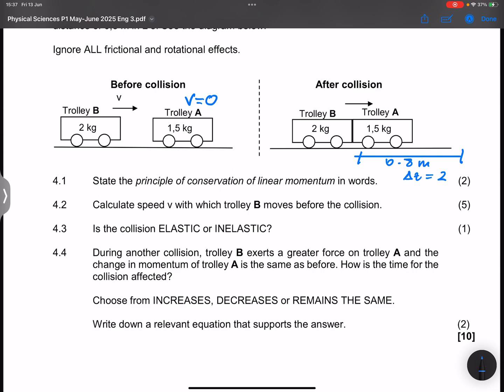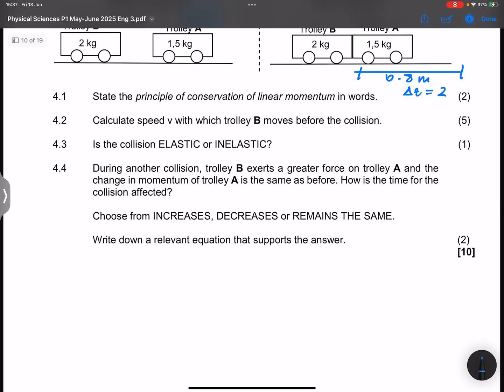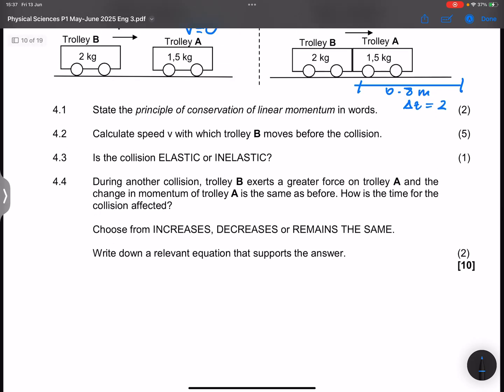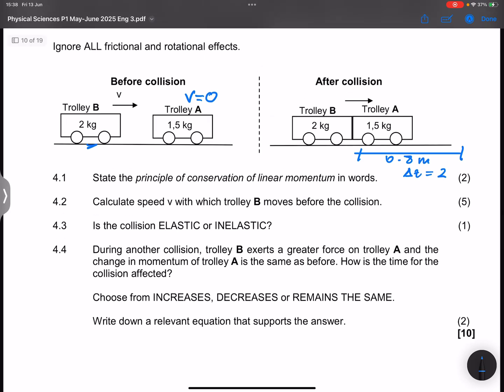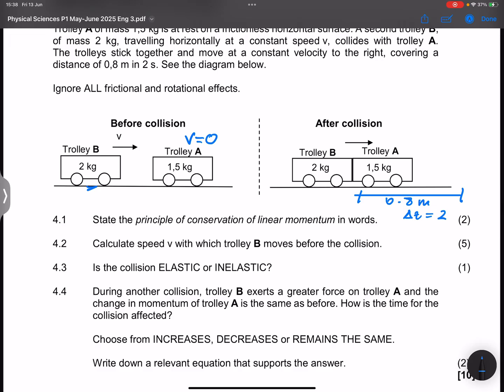They say calculate the speed V with which trolley B moves before the collision. Now, I want you to please note, if I wanted to find the speed V, I would need to find out what is the speed of the trolleys after they collide. But how do I do that? I've got the distance and the time. So, the speed of both trolley A and B would be change in displacement divided by change in time. That would be 0.8 divided by 2, which equals 0.4 meters per second.